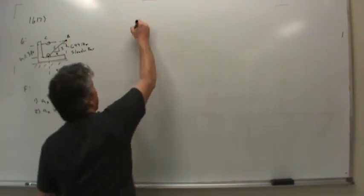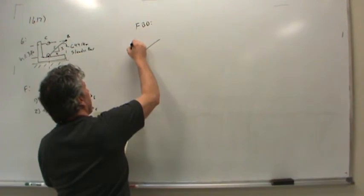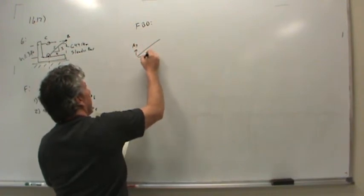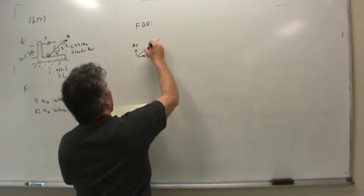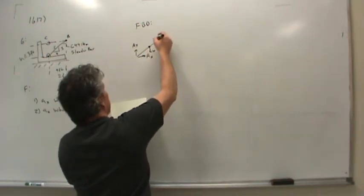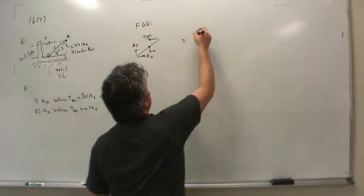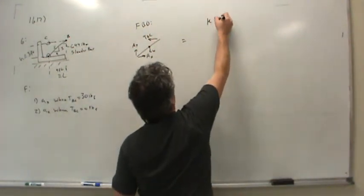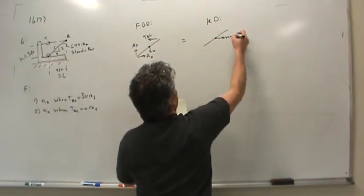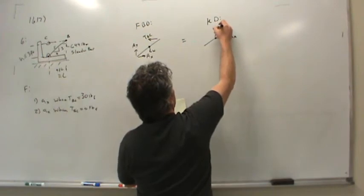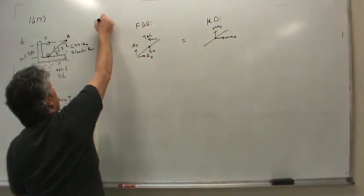Now let's start off with a free-body diagram and a kinetic diagram. AY, AX, weight acting in the center, and tension from the cable. And then that would be equal to the kinetic diagram, which has MAX and MAY. As usual, we've got our Cartesian X, Y coordinate system.